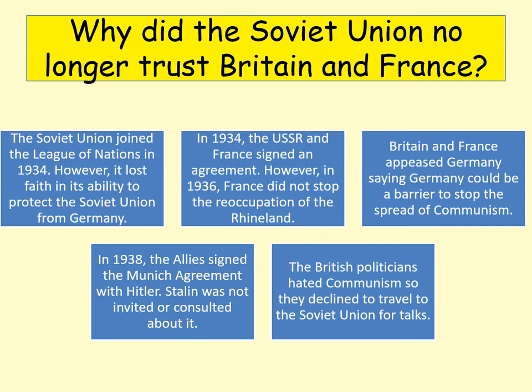One reason the Soviet Union signed was that it had lost faith in Britain and France as reliable allies. Britain and France talked during appeasement about how they saw communism as a greater threat than Nazi Germany, which built no trust. The Soviet Union had joined the League of Nations but lost faith after what happened in Manchuria with Japan and in Abyssinia with the Italians. The USSR and France had signed an agreement in 1934, but France didn't stop the reoccupation of the Rhineland. At the Munich Agreement in 1938, the Soviet Union wasn't even invited or consulted, which really increased tensions.